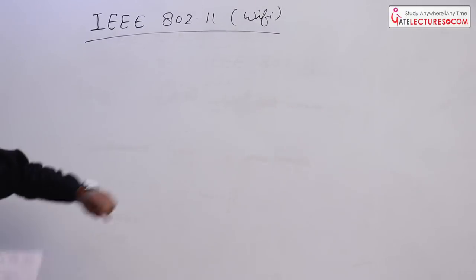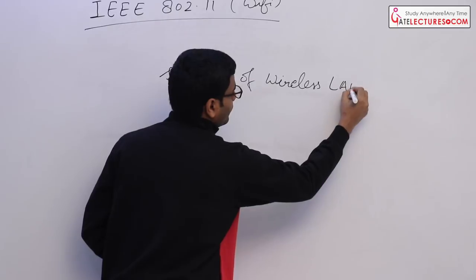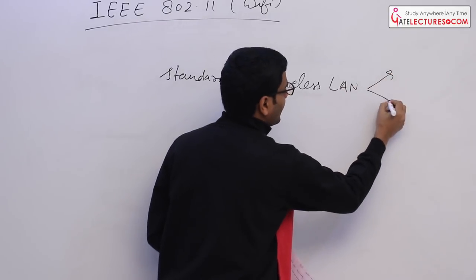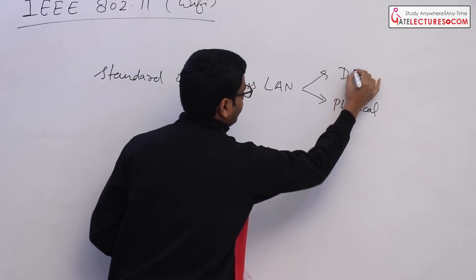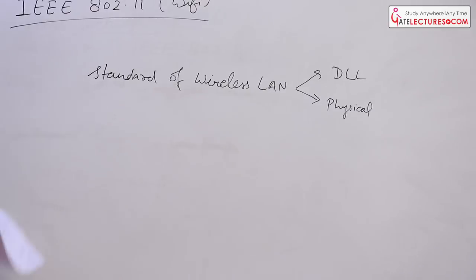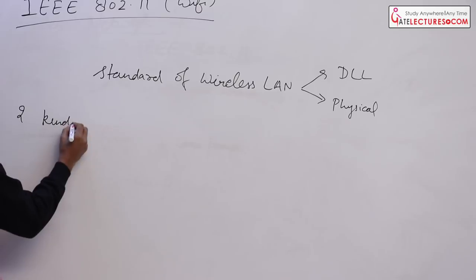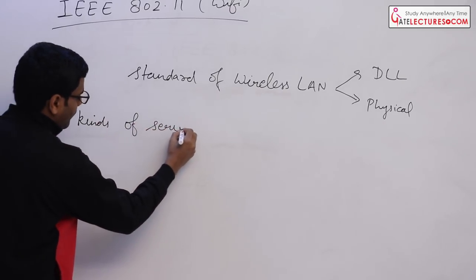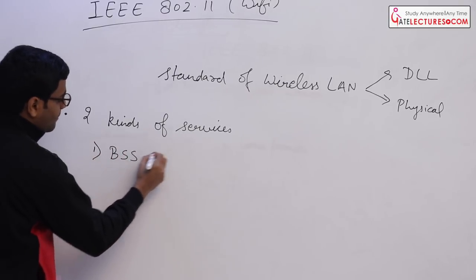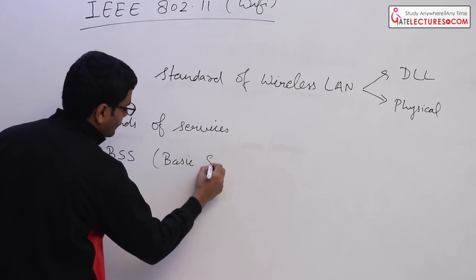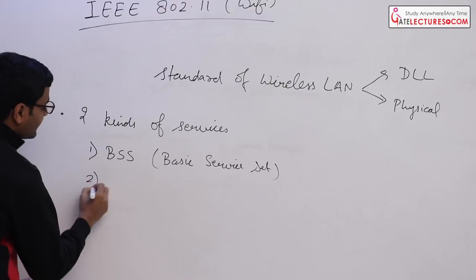IEEE 802.11 is a standard that provides a standard for wireless LAN covering two layers: the physical layer and the data link layer. In this standard we have two kinds of services: one is BSS — Basic Service Set — and the second is ESS.